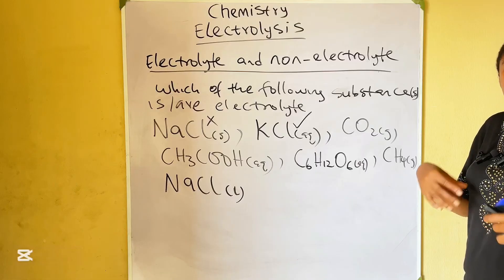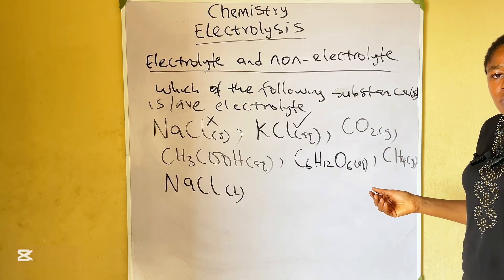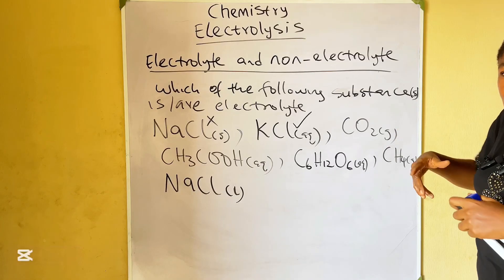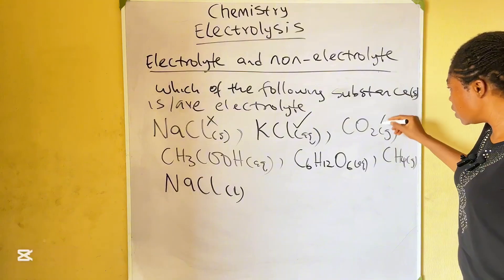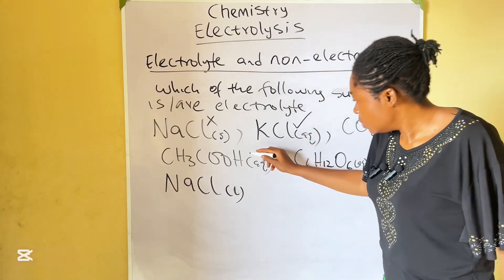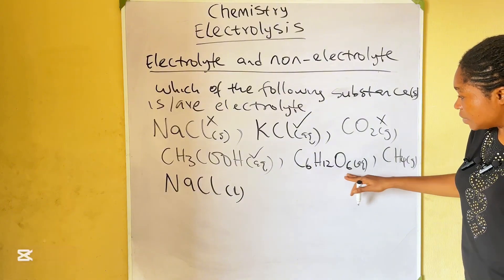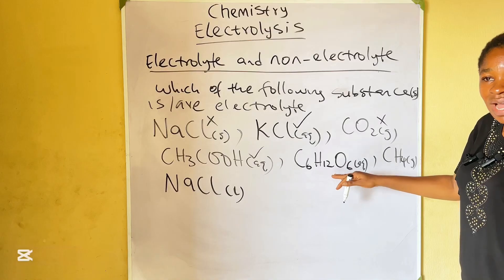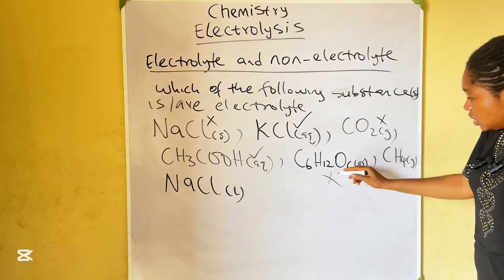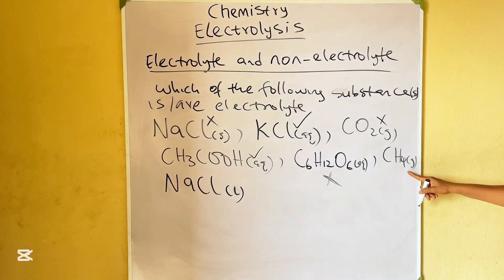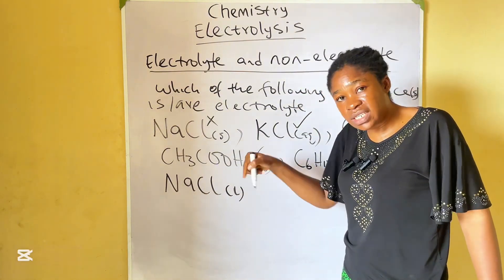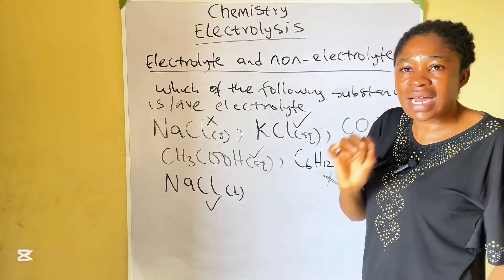Examples of non-electrolytes include covalent compounds, gases, organic compounds, and hydrocarbons. Organic compounds like sugar (glucose), carbohydrates, and proteins are non-electrolytes — whether in aqueous solution or solid state, they do not conduct electricity. Methane, a hydrocarbon, is also a non-electrolyte. However, a substance in liquid state — that is, molten form — can be an electrolyte. So when answering this kind of question, always look at the state of matter. Very important.